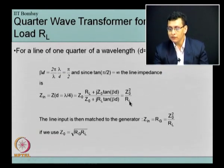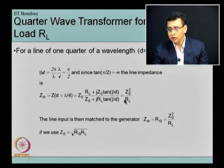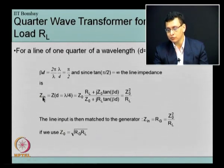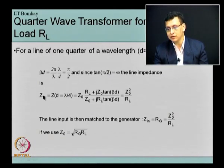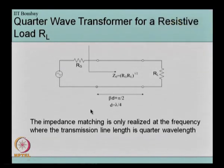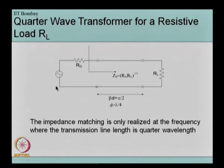A quarter-wave transformer inverts a load to its inverse. If R_L is a shorted stub, that is if R_L is 0, then we will see an infinite impedance at the source end, or if R_L is open circuited then we will see a short circuit at the input. For a resistive load the input impedance seen will be the inverse of R_L.